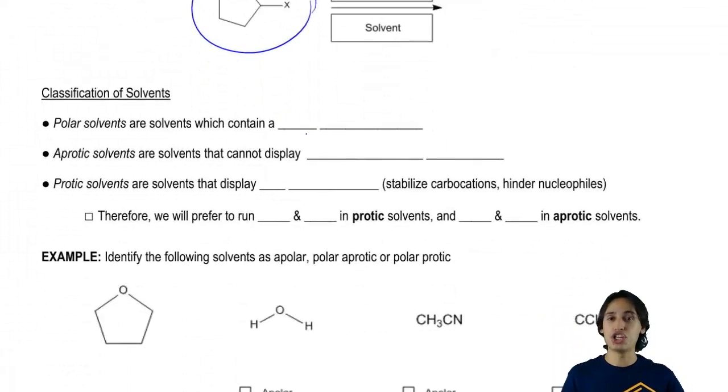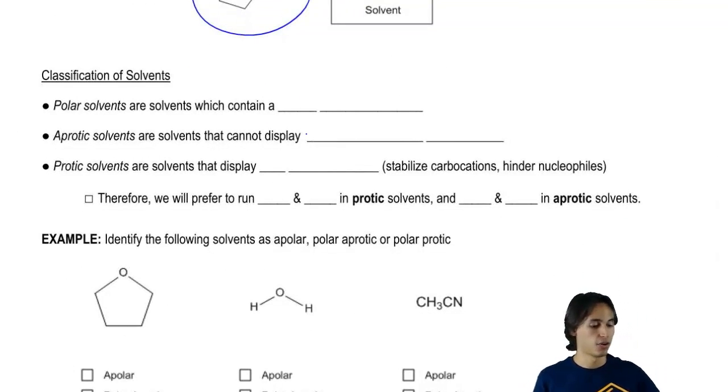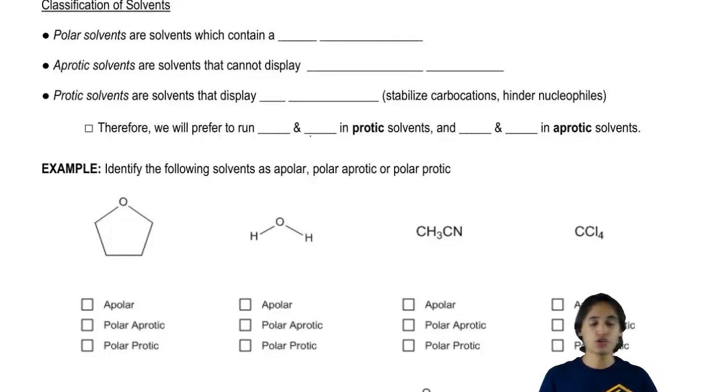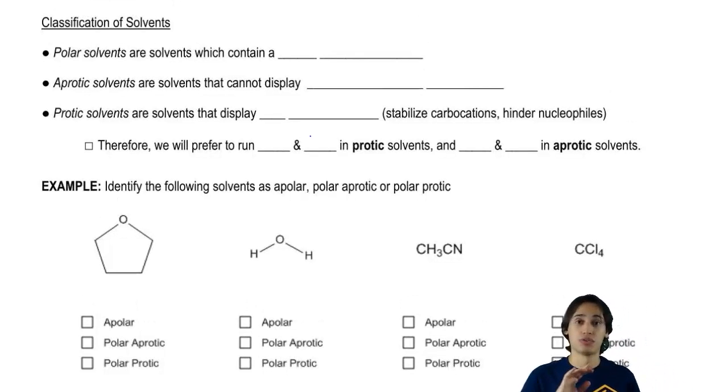As solvents go, there's basically three general categories that they fall under. The first would be polar solvents. And this has to do back with when we talked about dipoles a really long time ago.